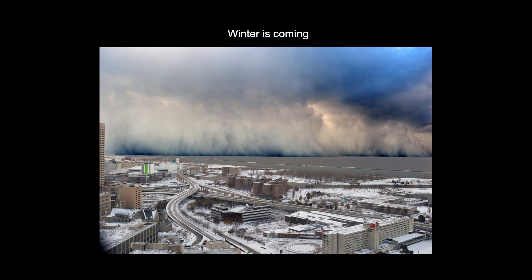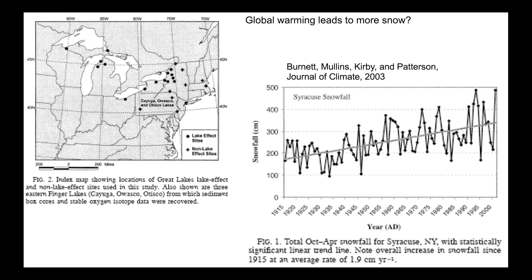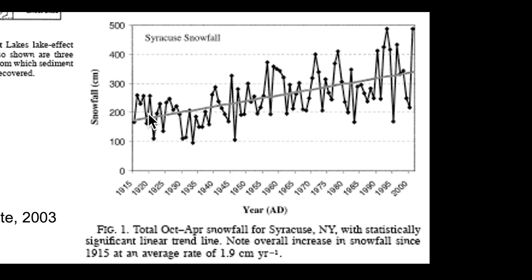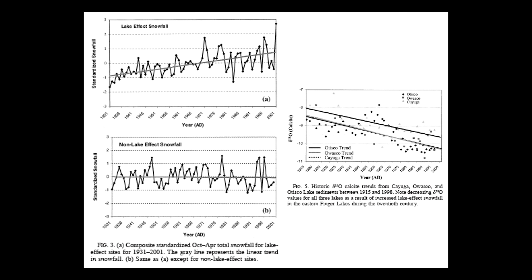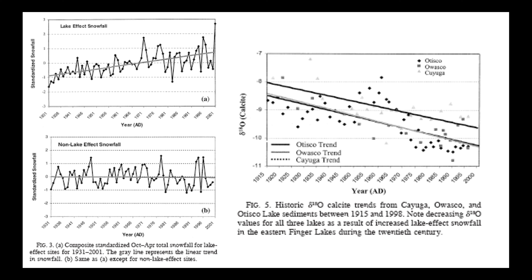It turns out that lake effect snow is directly coupled with global warming. Looking at meteorological records over the last 100 years to better understand the climatology of central New York, we noticed a pretty significant increase in snowfall — going from around 160 centimeters per year to around 320–330, occasionally up to 500 centimeters per year. This change occurred over the last 100 years, though the data depicted here covers only 85 years. Lake effect snowfall is distinct from non-lake effect snowfall, determined by backtracking moisture packages entering the region.